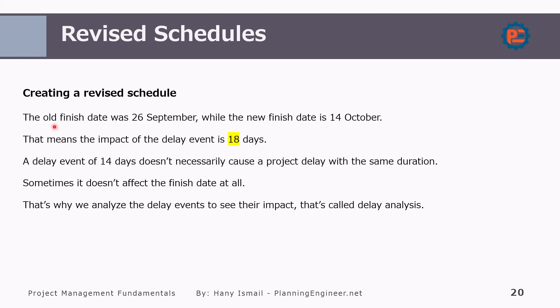You might now ask: the old finish date was 26th September, while the new finish date is 14th October — that means we have 18 days. But you might say the delay event is only 14 days, so why do we have a delay of 18 days? This is very important. Note the timing — the timing of issuing the variation order is very important in calculating how many days are delayed. That's why we do the delay analysis.